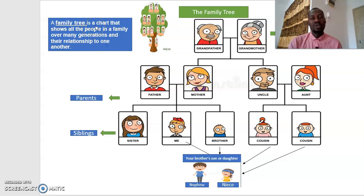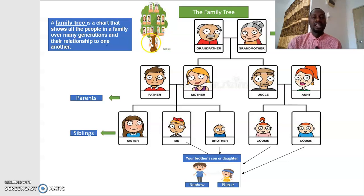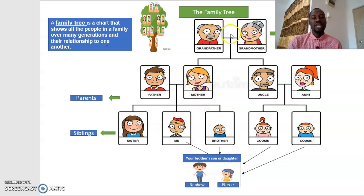The family tree is a chart that shows all the people in the family, or it shows the number of family members through the generations and their relations to one another. If you see here, this is the tree and the tree has branches. Similar to this, our families also have branches — each family has its own branch.